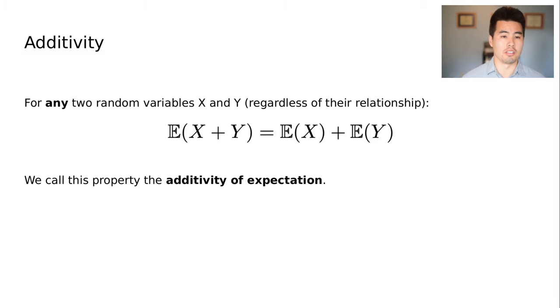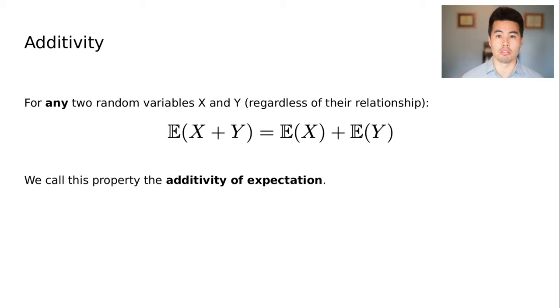Another relationship between expectations is additivity: the expectation of a sum of two variables is the sum of the expectations. This is pretty straightforward, but we'll use it in a couple of our later definitions, and we'll see some interesting results when we look at sums of random variables later in the lecture.